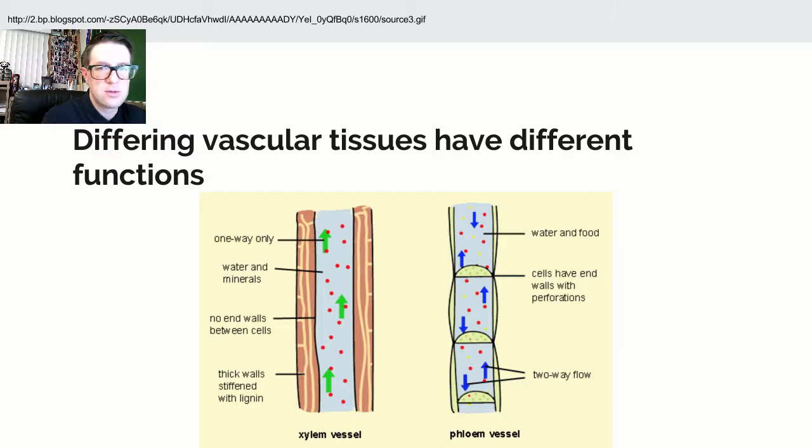Xylem vessels do not connect with phloem vessels. So it's two totally separate yet parallel systems, unlike us, where we actually have the arteries connecting to capillaries, which connect to veins, which will connect back through the heart to arteries again.